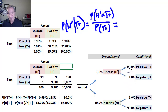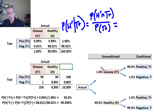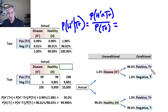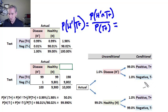The 99% accuracy means: if the patient has the disease, there is a 99% probability the test result will be positive — that's a true positive, also called sensitivity. This also implies a 1% conditional probability of a false negative, where the patient has the disease but the test result comes back negative.